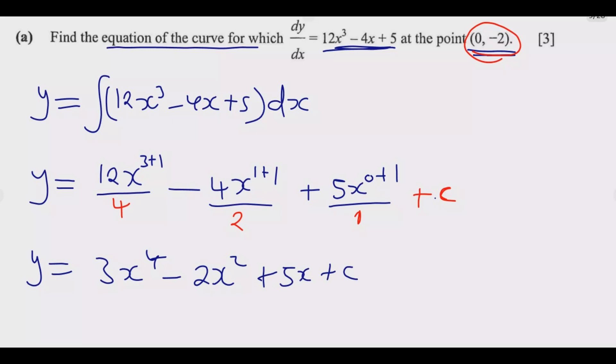Then we need to find the value of C. So what do we do? We substitute the value. So at this point y equals -2 according to that coordinate. Then x equals 0, so meaning -2 equals 3(0)⁴ - 2(0)² + 5(0) + C.